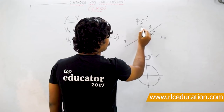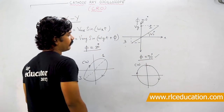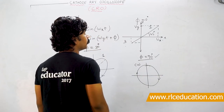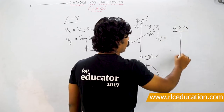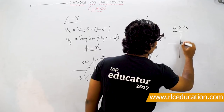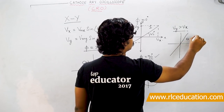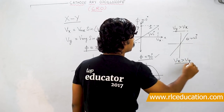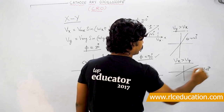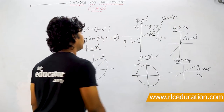When φ = 0° and Vx = Vy, you get a 45° straight line. If Vy > Vx, the slope increases and θ > 45°; if Vx > Vy, the slope decreases and θ < 45°. At φ = 90°, a circle forms only when Vy = Vx. If Vy > Vx at 90° phase, you get a vertical ellipse. If Vy < Vx at 90° phase, you get a horizontal ellipse.